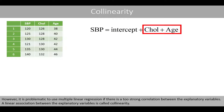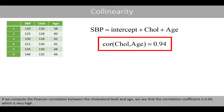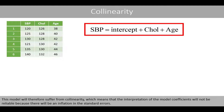However, it is problematic to use multiple linear regression if there is too strong a correlation between the explanatory variables. A linear association within the explanatory variables is called collinearity. If we compute the Pearson correlation between the cholesterol level and age, we see that the correlation coefficient is 0.94, which is very high. This model will therefore suffer from collinearity, which means that the interpretation of the model coefficients will not be reliable because there will be an inflation in the standard errors.